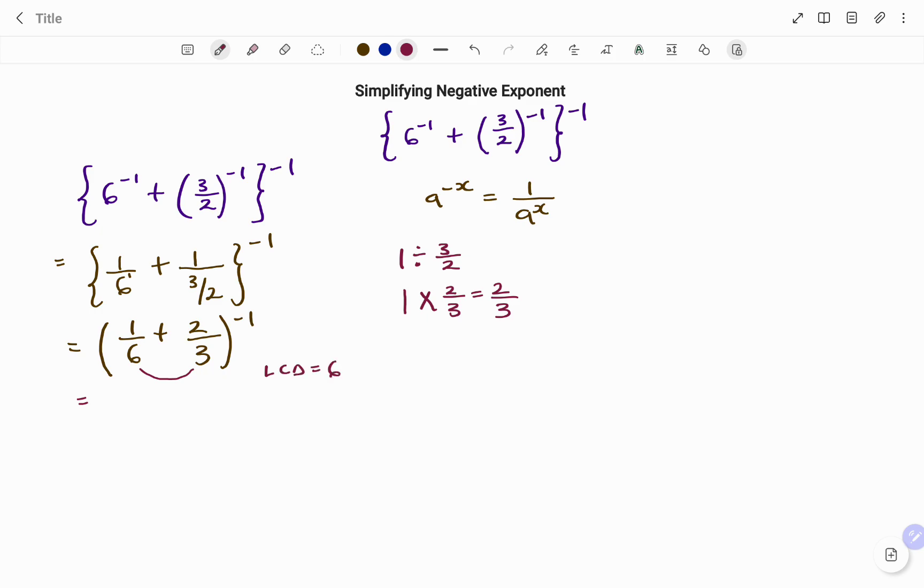I'm going to multiply the left fraction by 2 over 2 to make the denominator 6. That becomes 1 over 6 plus 2 times 2, which is 4, over 3 times 2, which is 6, all to the power of negative 1.